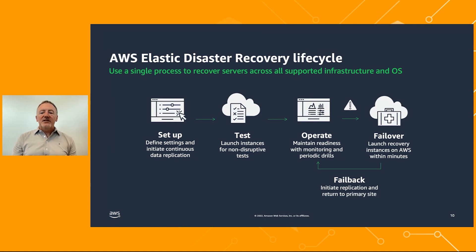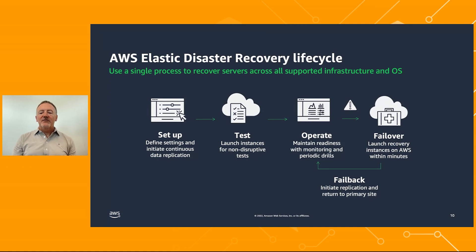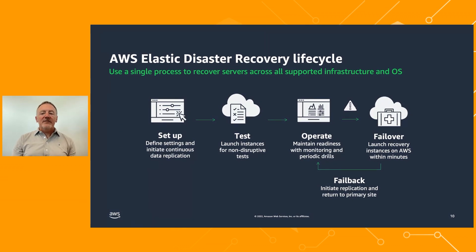DRS allows you to use the same process to replicate and recover all of your on-premises and cloud-based applications across all supporting OS versions. The quick, simple setup process includes initiating continuous data replication by installing an agent and defining your replication and launch settings. You can conduct non-disruptive tests to complete the setup. You maintain disaster recovery readiness by monitoring data replication and performing periodic recovery and fail-back drills without impacting replication or user activities. If you need to recover applications, you can launch recovery instances on AWS within minutes, using the most up-to-date server state or a previous point in time. Your recovered applications run natively on AWS until the issue at your primary site is resolved. At that point, you can initiate data replication back to your primary site and fail-back whenever you're ready.